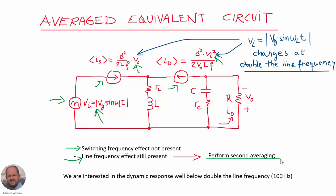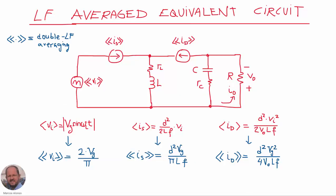We need to have only the effect corresponding to the DC values. In power factor correction converters we are interested in the dynamic response well below double the line frequency. So now we perform a second averaging process to get rid of the effect of the double line frequency. For example, for the input voltage, which is a waveform like this, we do the averaging and get the well-known expression two times the peak value vg divided by pi.